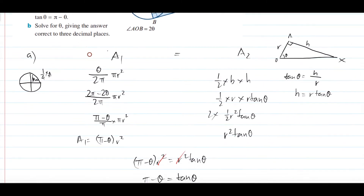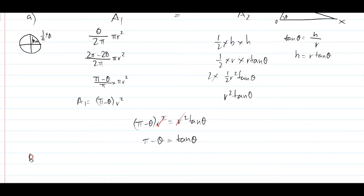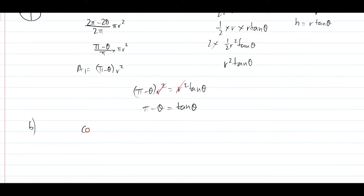That is part A. Hopefully you understand what went through there — as long as you know the area formulas for your triangle and your segment it shouldn't be too much of a problem. For part B, it simply says solve for theta. You enter the equation into your CAS calculator and the answer is approximately 1.113 radians. That's pretty much it. Hopefully you found this video useful, and I'll see you in the next lesson.